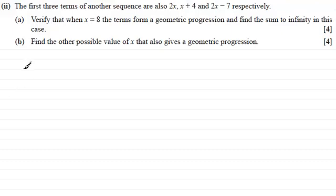Okay, welcome back. To do the first part, let's put this as a. I'm going to let x equal 8 and see what terms we've got. If we put x equals 8, the first term is 16, the next term is 8 plus 4 which is 12, and then 16 minus 7 which gives us 9.